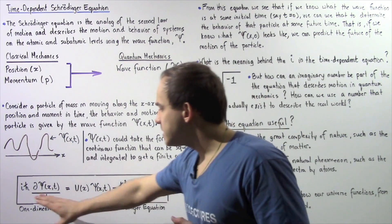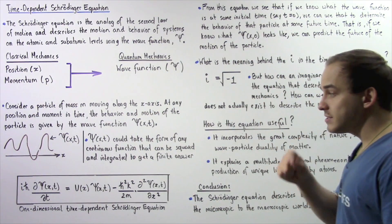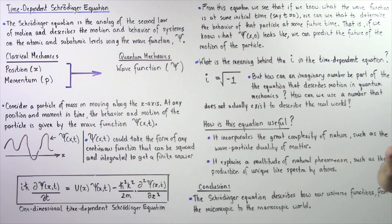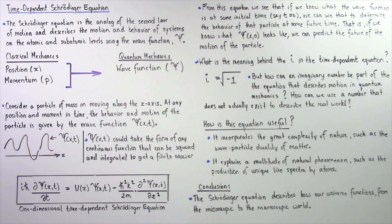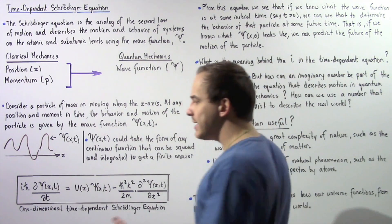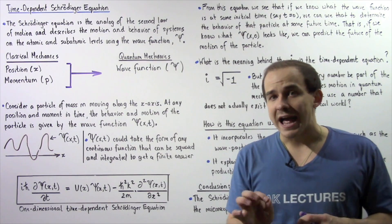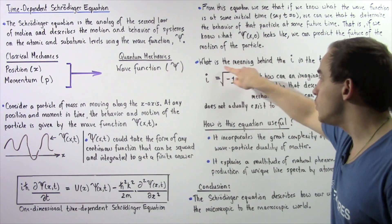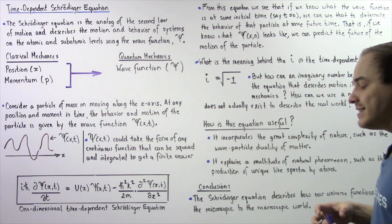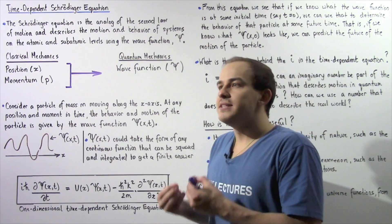Now let's go back for just a moment to the left side of this equation and examine what the meaning is behind the i term that appears in the time-dependent Schrödinger equation. What exactly is the meaning behind this i? The i is, in fact, an imaginary number. i is equal to the square root of negative one. And an imaginary number is basically a number that does not exist.